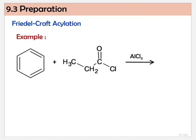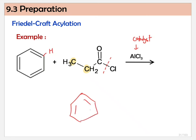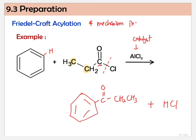For the example, the R group has two carbons. Any hydrogen on the benzene ring can be replaced by the acyl group after it breaks from the chloride. Don't forget to write AlCl3 above the arrow since it acts as a catalyst. The product is: benzene ring bonded to C=O, CH2, CH3, plus HCl as byproduct. Remember, there is a mechanism included for Friedel-Crafts acylation, so hopefully you still remember the mechanism for this reaction.